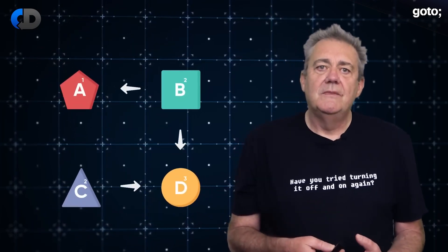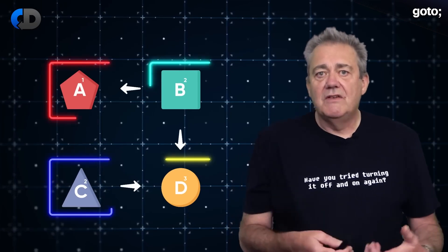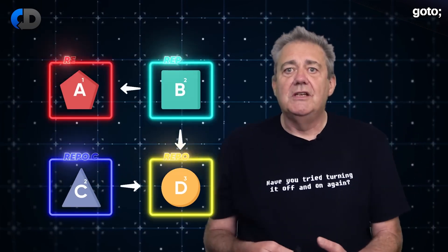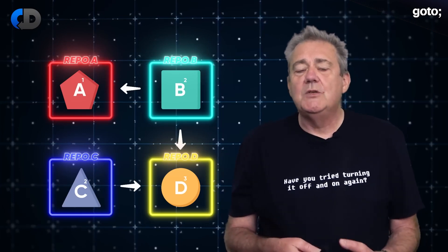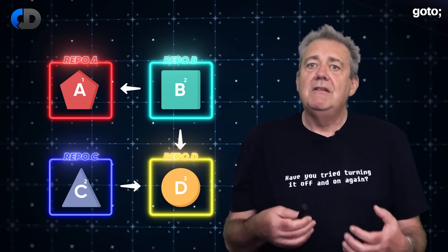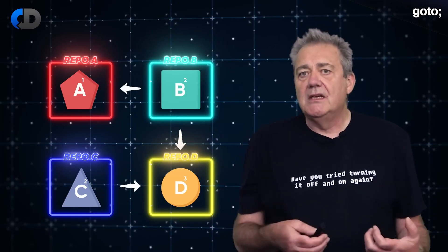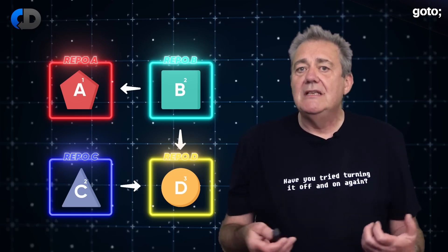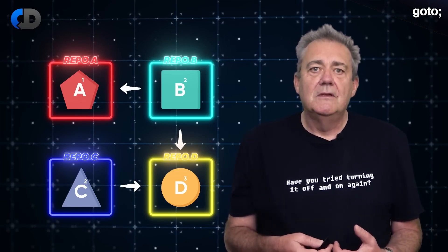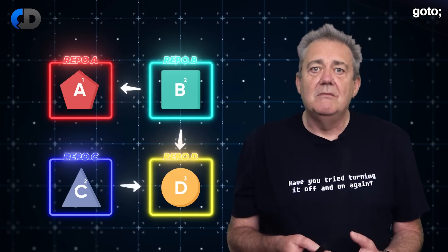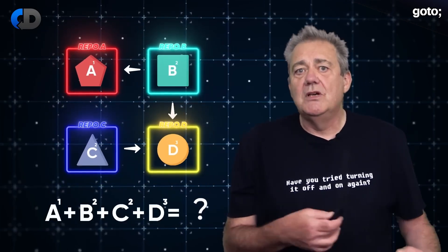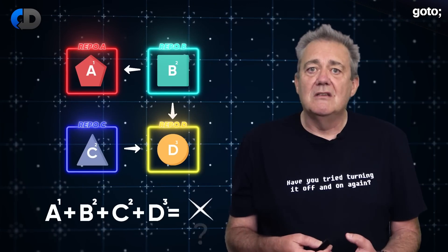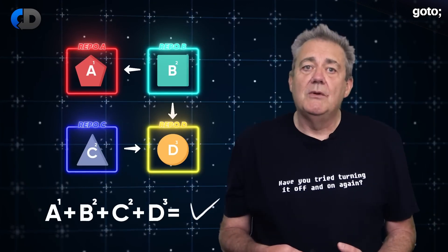Let's look at the multi-repo approach. In this model, each service lives in its own repository. Here is the same system, but now we store each piece separately. There is clearly a problem here: there is stuff that isn't in any of the repos — the communication between the pieces of our system and the specification of which versions of the pieces work together to make a whole system. These things aren't stored anywhere.